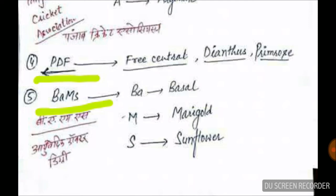For basal placentation, the trick is BAMS — you already know it as a medical degree. B for basal, M for marigold, S for sunflower. This is our simple trick to remember different kinds of placentation. Thank you for watching.